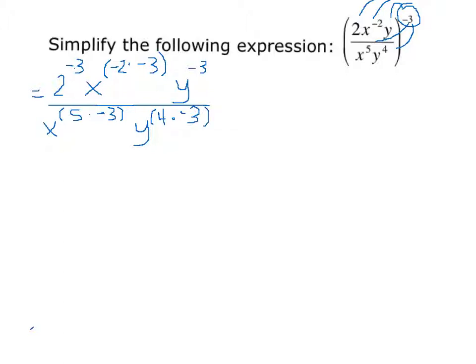Now we want to simplify this further. So in the numerator, we have 2 to the negative 3 times x, and multiplying negative 2 times negative 3, we get x to the 6, and y to the negative third.